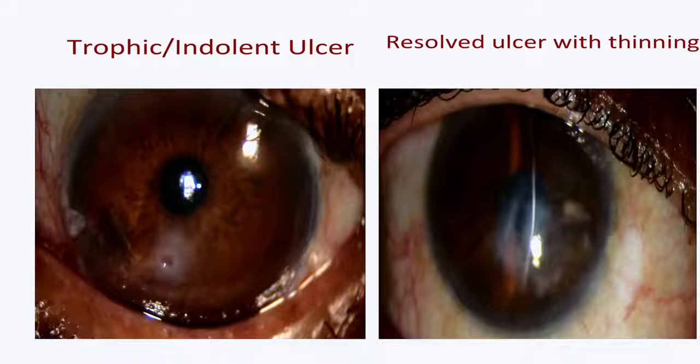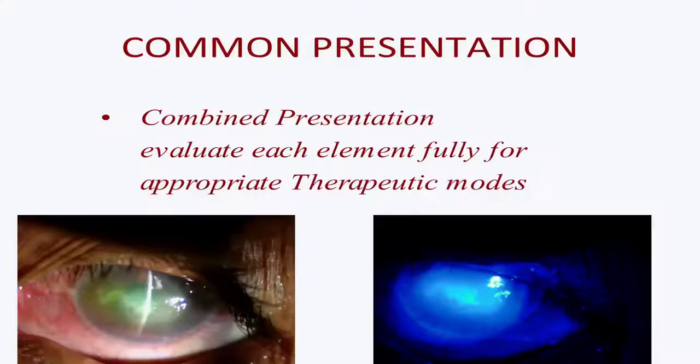Patients sometimes present referred for a corneal graft, and you don't know whether they had viral keratitis earlier. But when I see thinning and vascularization, I presume it is due to viral keratitis, and if taken for a corneal graft I put the patient on oral acyclovir prophylaxis. The common presentation in our scenario is never as typical as described; it is always a combined presentation of epithelium and stroma. We need to see which part is more active and treat accordingly. If there is an epithelial defect, the patient needs topical or systemic acyclovir.